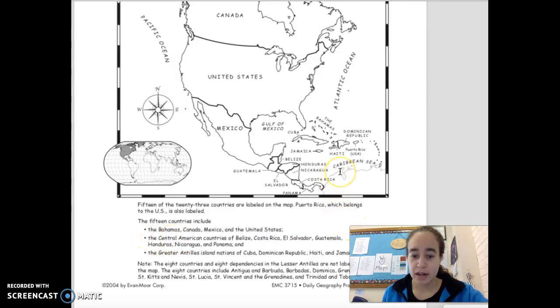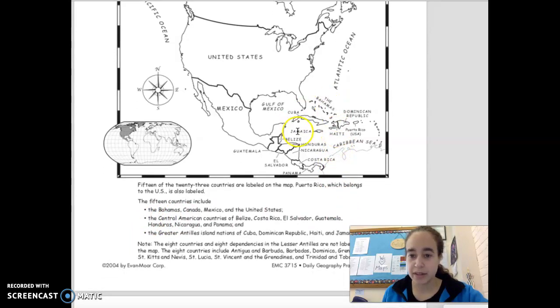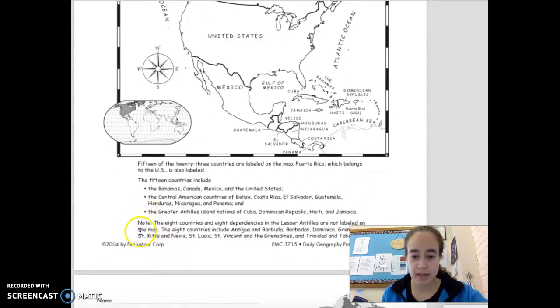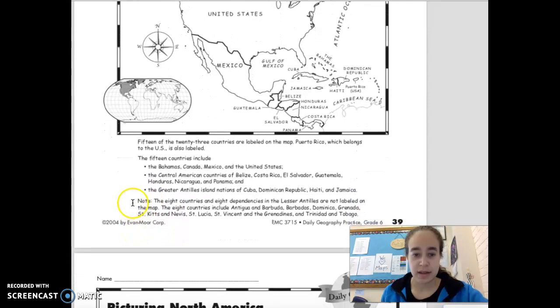Then there are these Caribbean islands. They're in the Caribbean Sea. They're labeled here and then these really tiny ones over in this section. This is labeled in the note down here - what those island countries are called.